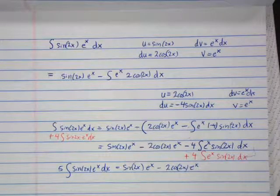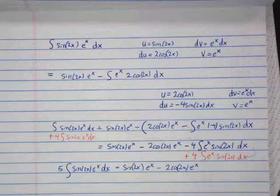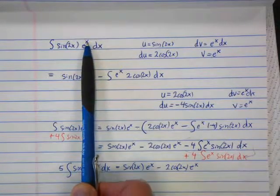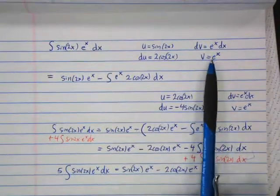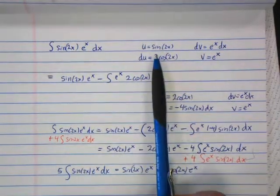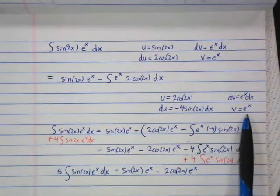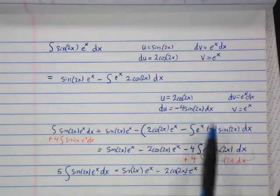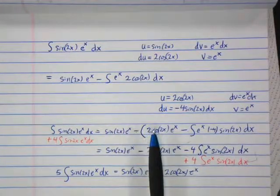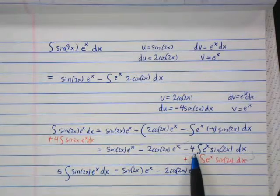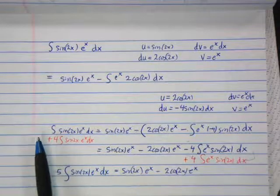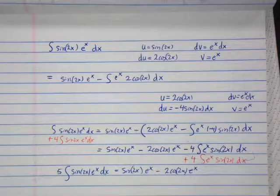If you had e to the 3x instead, you'd end up with fractions: integrating e to the 3x gives one-third, then one-ninth, and so on. You'd eventually cycle back to the same integral, but you'd have four-ninths out front instead of four, and you'd have to add four-ninths of the integral to both sides and divide by the appropriate fraction. It would still work, just uglier.